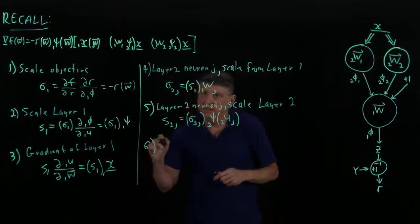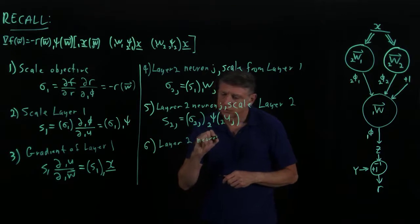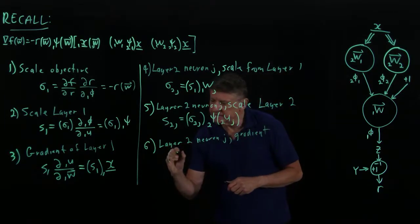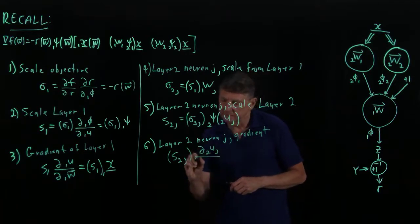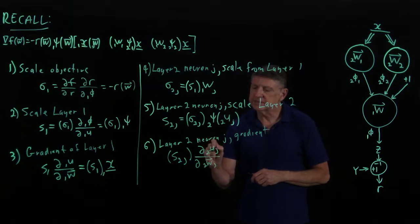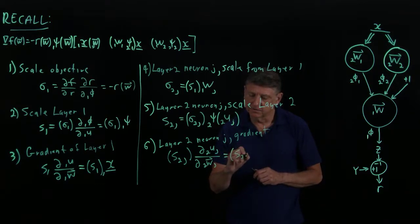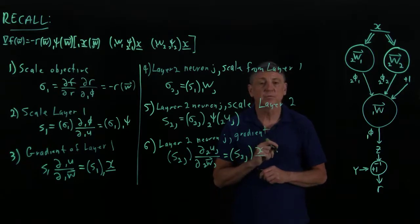Computation six is the layer two gradient component. We take the scale factor at layer two for neuron j and multiply it by the derivative of the linear response at layer two for that neuron with respect to the weight vector at layer two for that neuron. The derivative of the linear response with respect to the weights is always the input to that neuron. So that equals the scale factor for neuron j at layer two times the observation that we are providing.